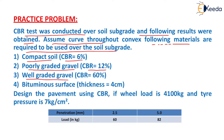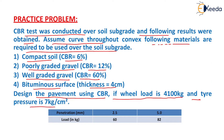Well graded gravel whose CBR value is 60%, and bituminous surface whose thickness is 4 cm. We have to design the pavement using the CBR value if the wheel load is 4100 kg and tyre pressure is 7 kg/cm². The load is given at 2.5 mm penetration as 60 kg and at 5 mm penetration as 82 kg.